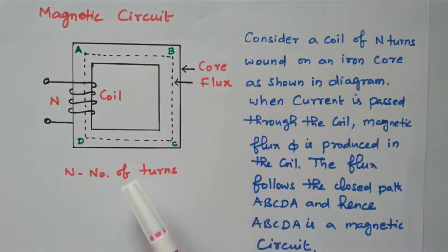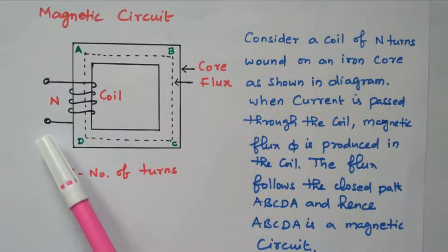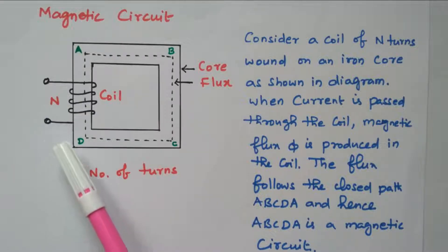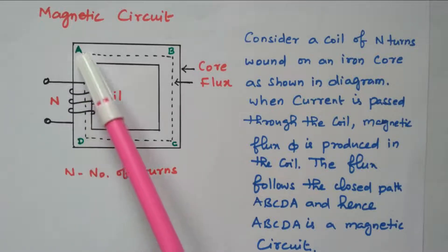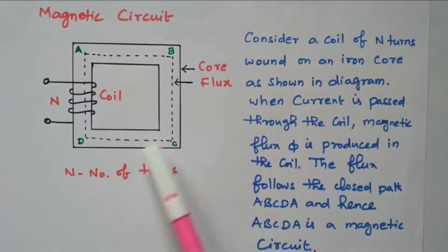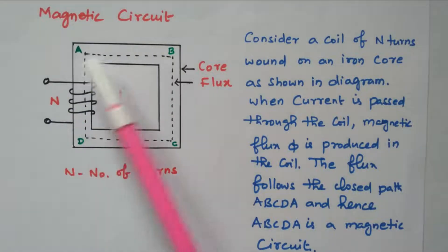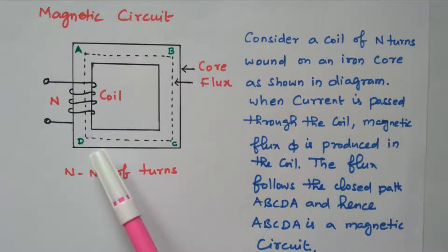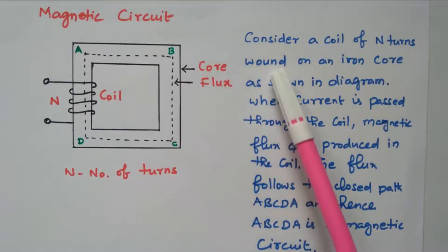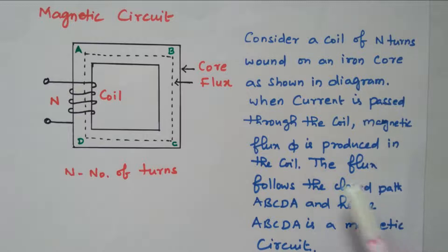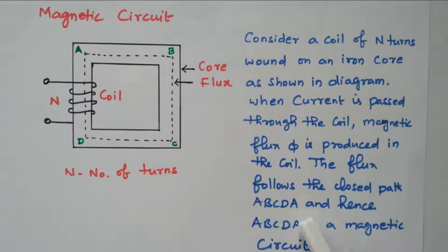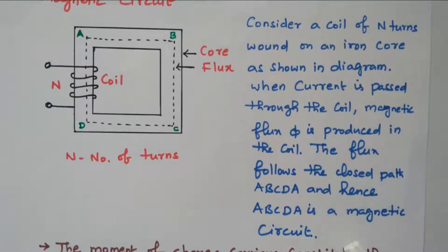So we have an iron core over which a coil is wound. When the coil is given a supply, current flows, and due to the rate of change of current, flux is produced in the coil. That flux follows the closed path ABCDA through the iron core. This closed path ABCDA — with a coil of N number of turns wound on the iron core, when current passes through the coil, magnetic flux is produced and follows ABCDA — is nothing but a magnetic circuit.